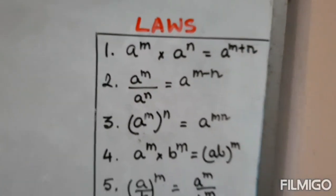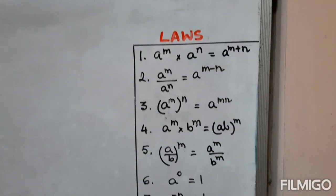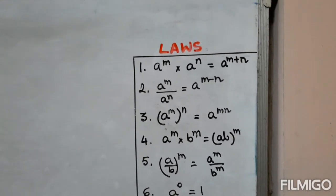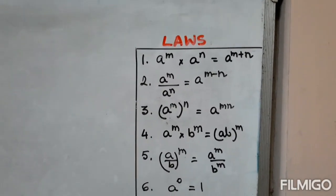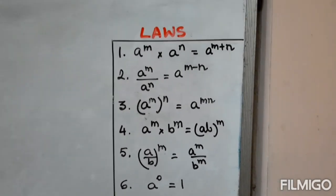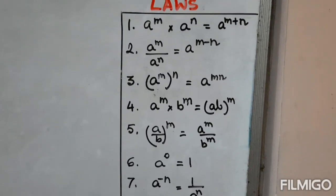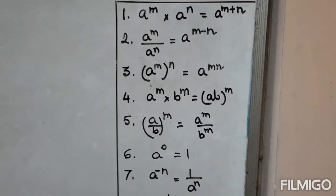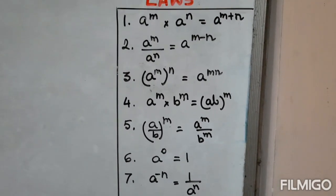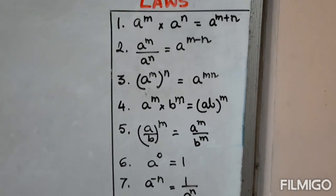In the laws, we have a to the power m into a to the power n equals a to the power m plus n. That means when the bases are same and multiplied, powers are added. When the bases are same and divided, powers are subtracted. So a to the power m divided by a to the power n equals a to the power m minus n.